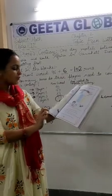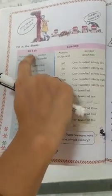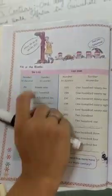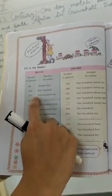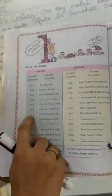Now open your books. Look at page number 16. This is the exercise — fill in the blanks. यह एक game है। 99 से हमें counting करनी है 112 तक। यहाँ कुछ blanks दे रखे हैं। मैंने यह exercise already कर चुकी हूँ — आप इसे अपने घर पर अपनी books में करेंगे।